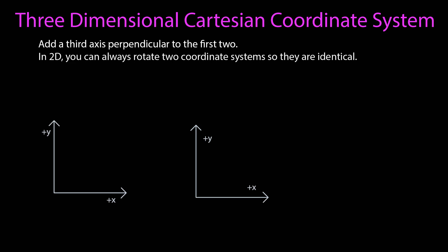And while it may take more complicated rotations, in two dimensions you can always do rotations so that the coordinate systems are exactly alike. That becomes important later.